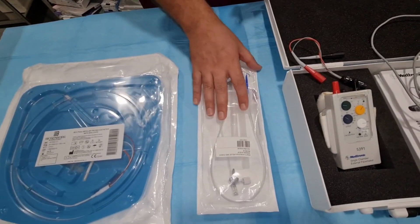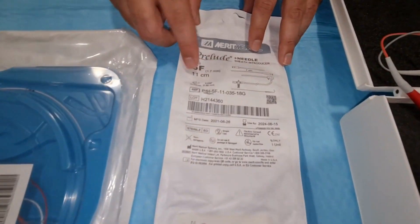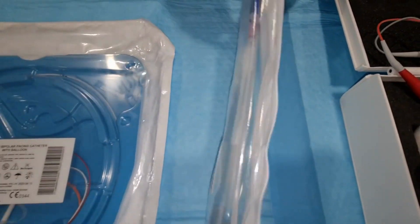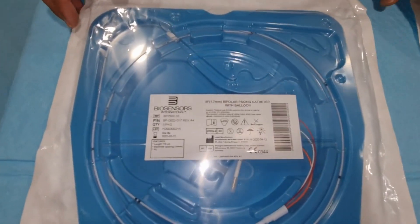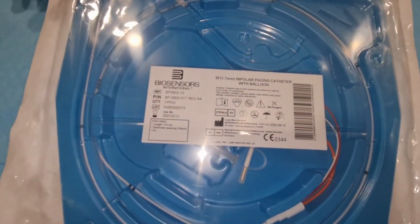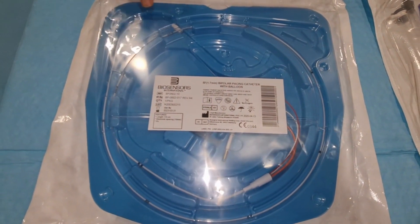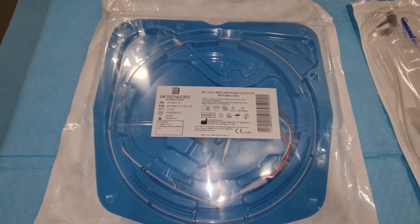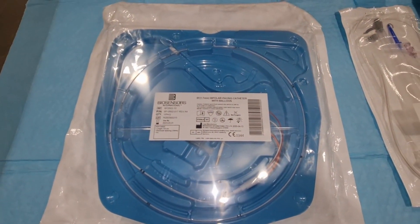Next we require, if it is 5 French, we are going to have a 5 French sheath, femoral sheath for the venous access. Then, this is the TPM lead with the balloon tip. Now I will show you how to prepare this generator for use.